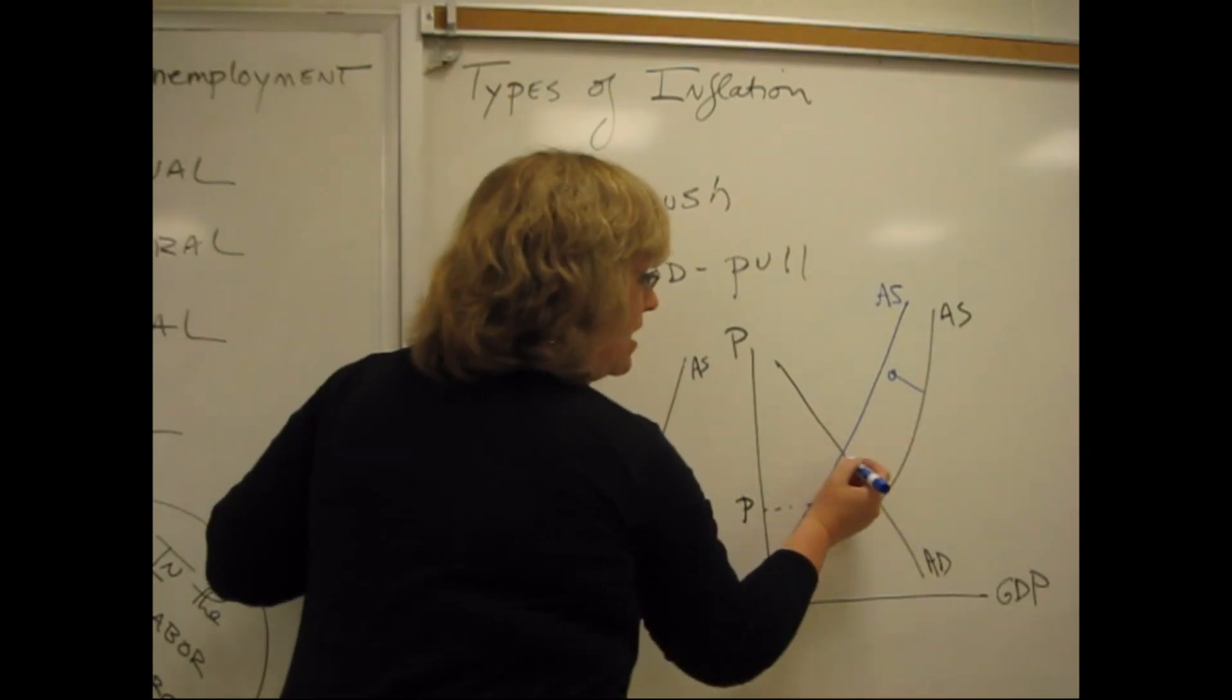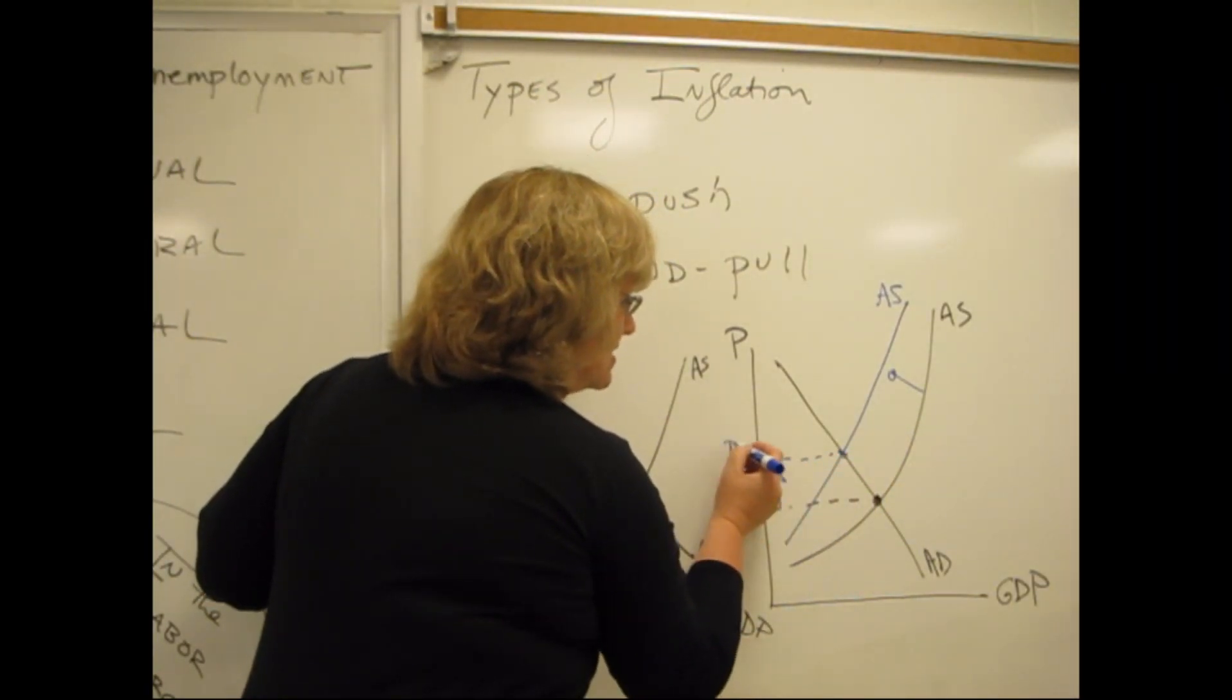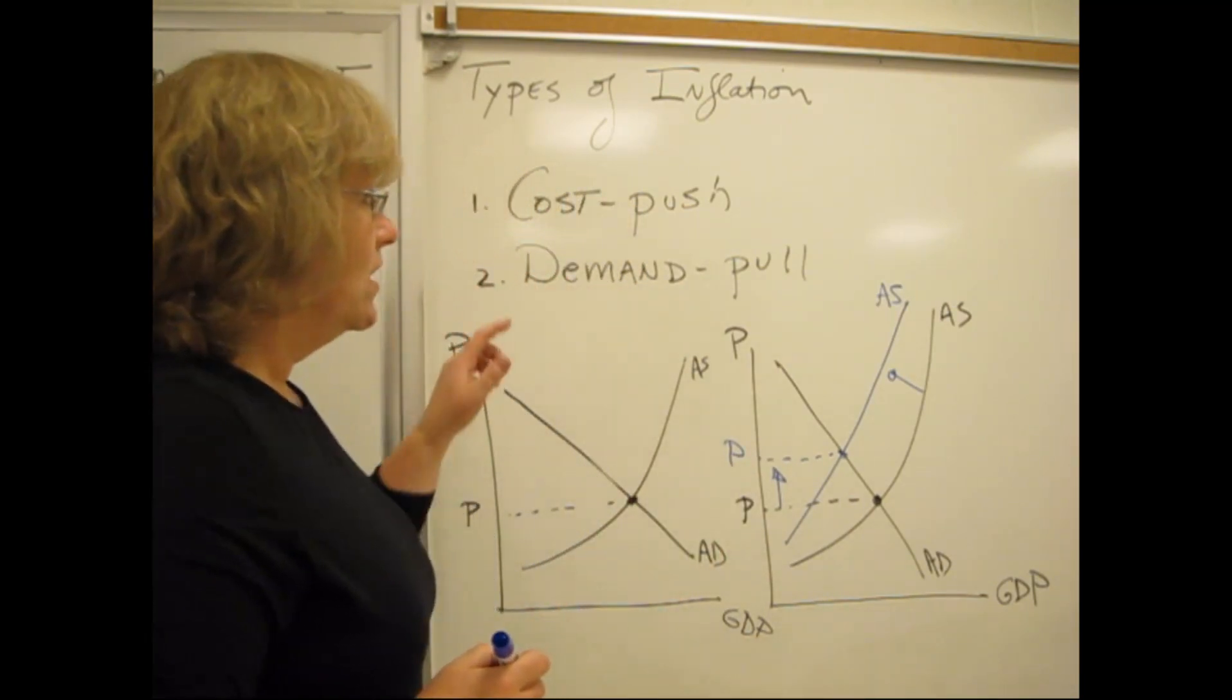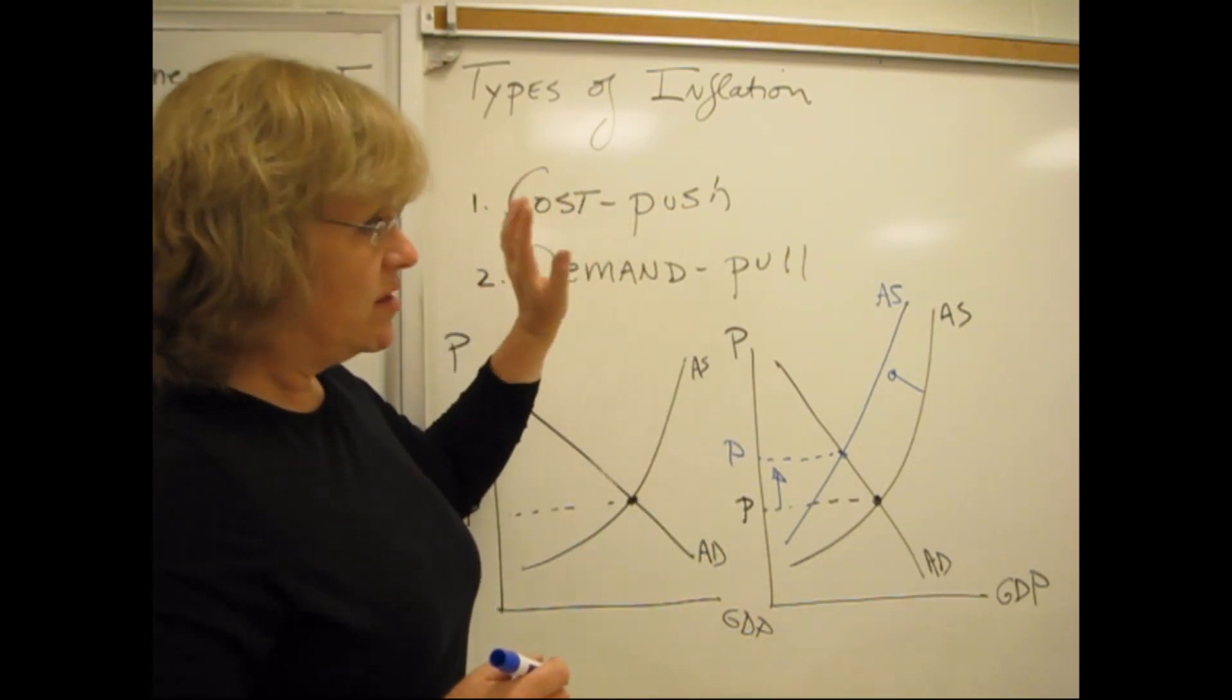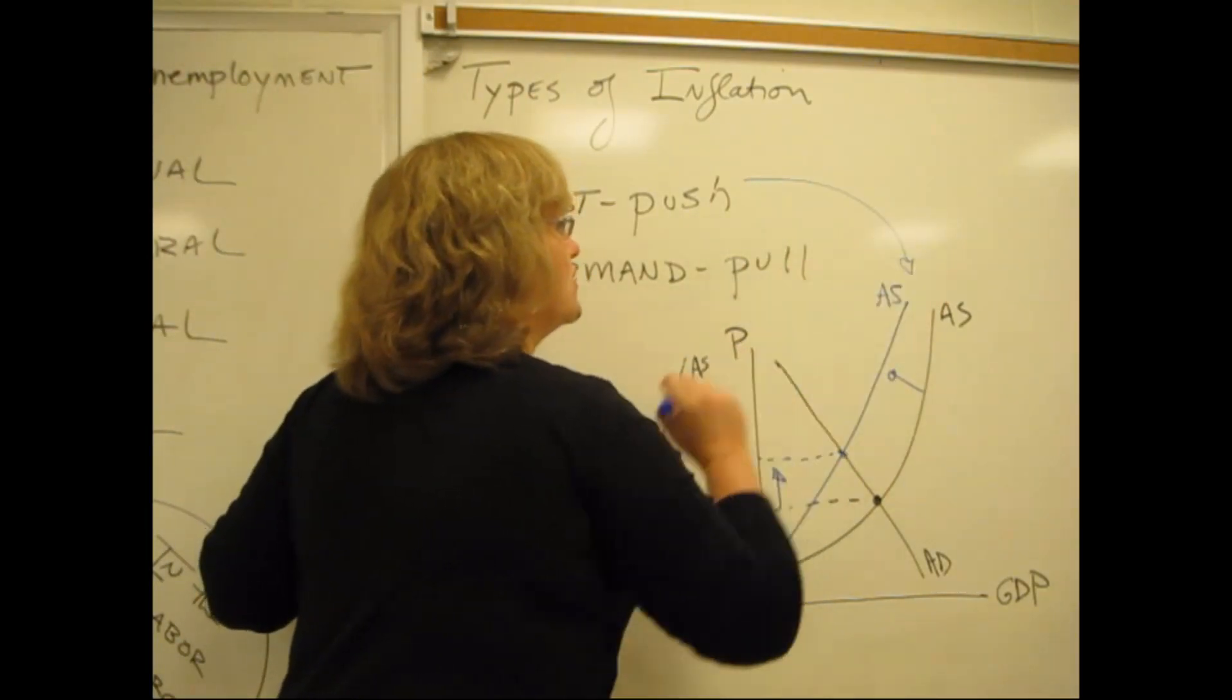A good historical example of that is the OPEC oil embargo price increases of the 1970s. That shift of the supply curve causes an increase in prices across the whole country. So if the inflation, the price increase is coming from the supply side, it's called cost push inflation.